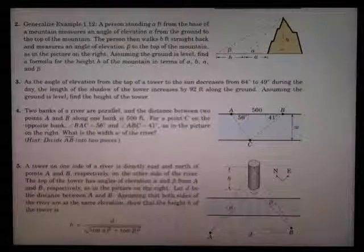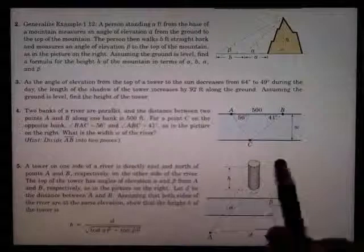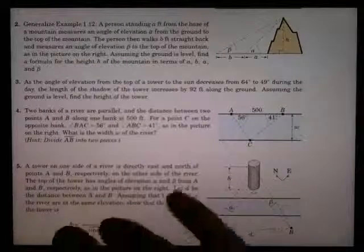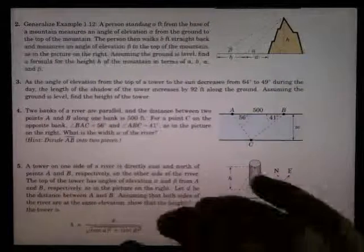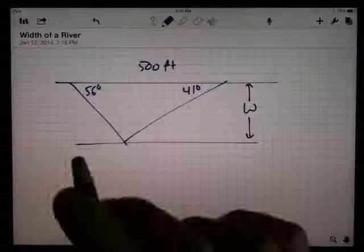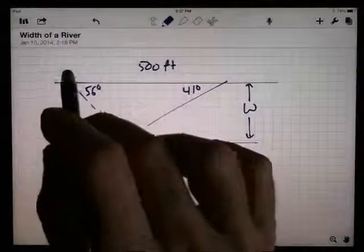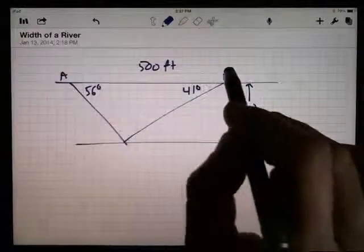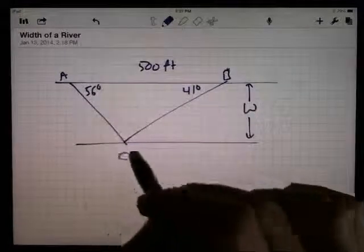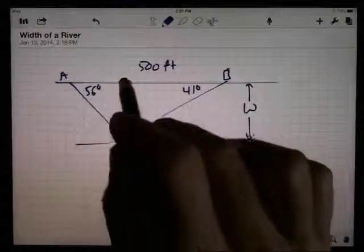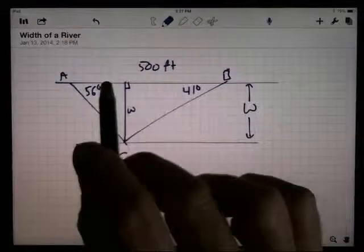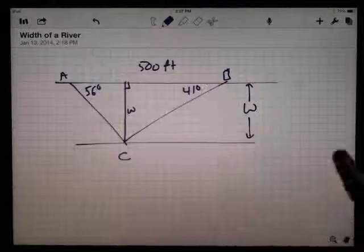That's what you call triangulation. Width of the river. They give you a hint here, divide AB into two pieces. I'm going to move over this way. Divide it into two pieces. This is A here. This is B over there. What we're going to do is we're essentially going to drop a perpendicular from C down here. That's the width that we're looking for.